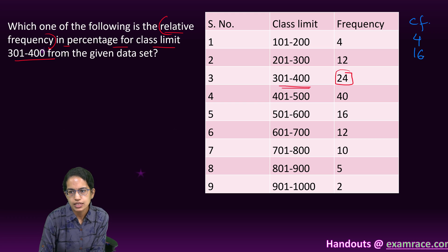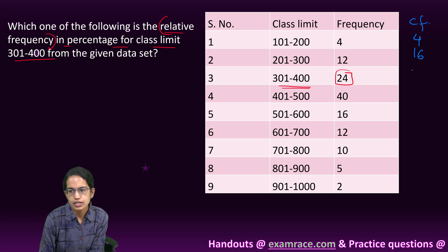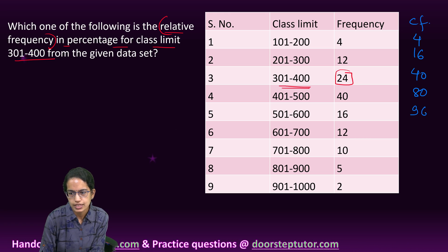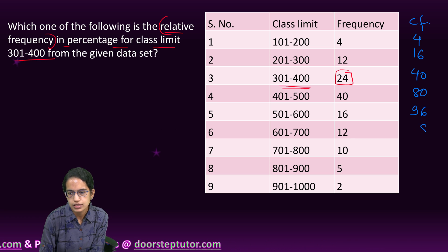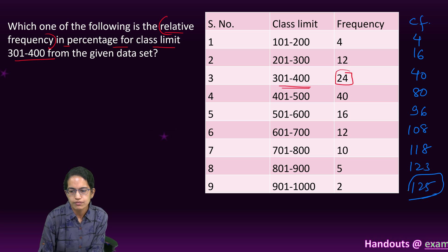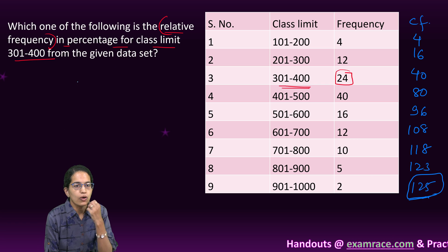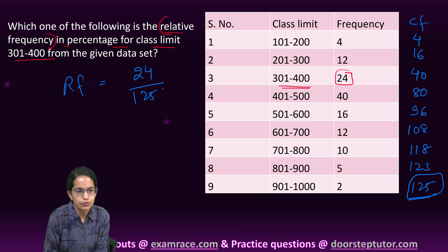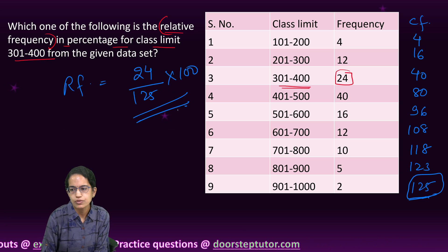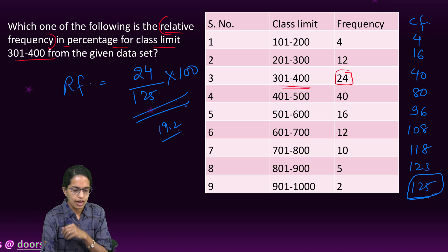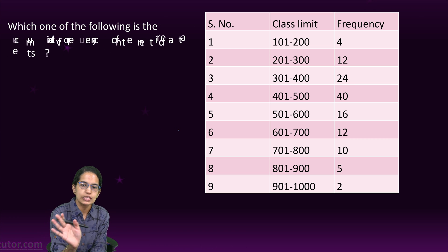The cumulative frequencies are: 4, 16, 16+24=40, 40+40=80, 80+16=96, 96+12=108, then 118, 123, and 125. So 125 is the total frequency. The relative frequency for class 301-400 would be 24 divided by 125, multiplied by 100, which gives approximately 19.2%.